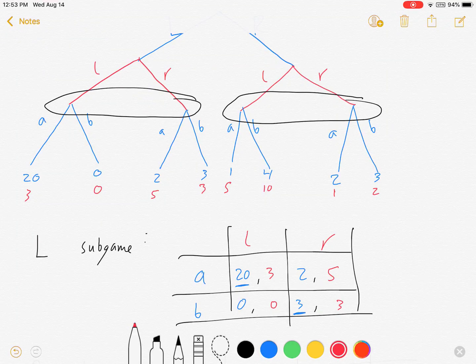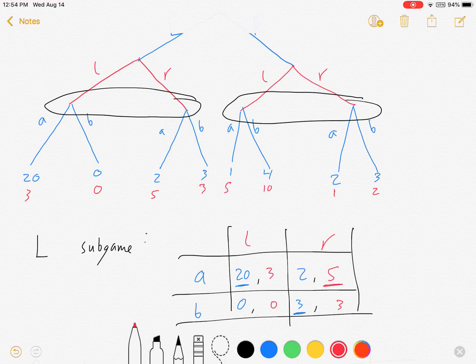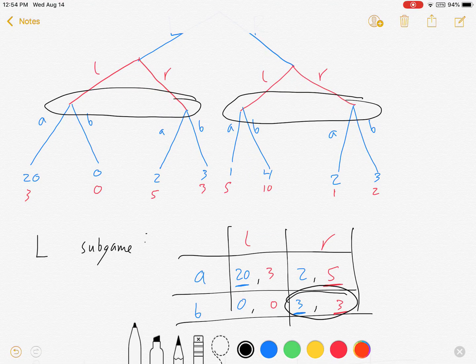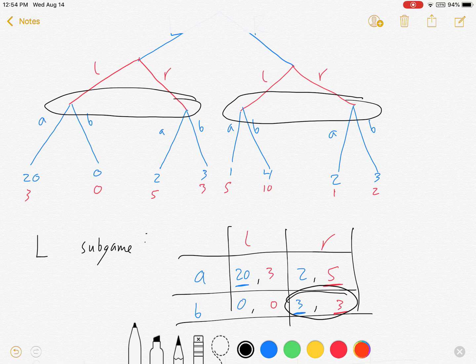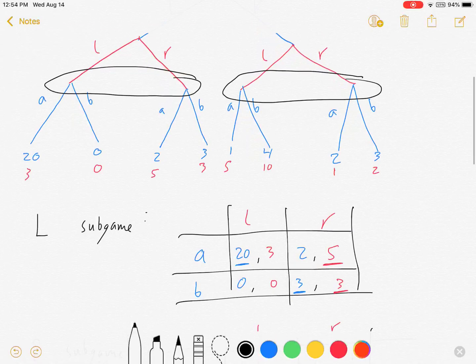Let's do the other side of it. If blue plays A, red prefers right over left. And if blue plays B, then red prefers right over left. And so here we've got a Nash equilibrium for that sub game. A Nash equilibrium that has blue playing B and red playing R.